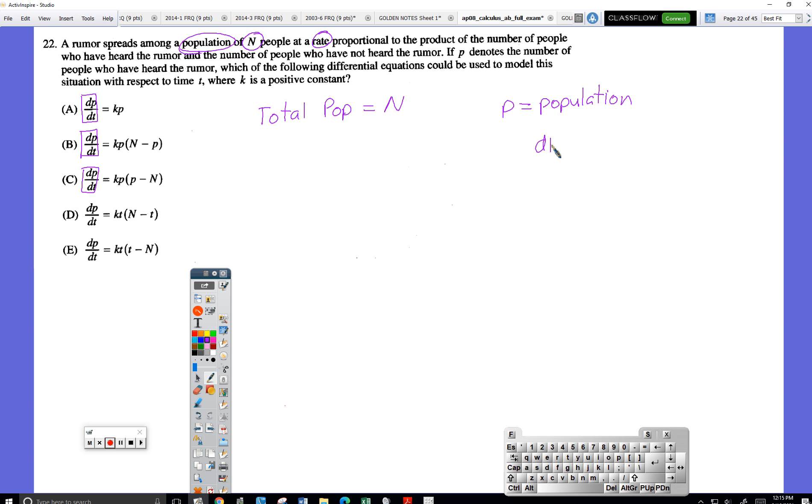The rate of change of the... It actually defines P later. Oh, here we go. P equals the number of people who have heard the rumor. Wow. Yeah. Skip that. So I've got this rate thing, dP/dt.